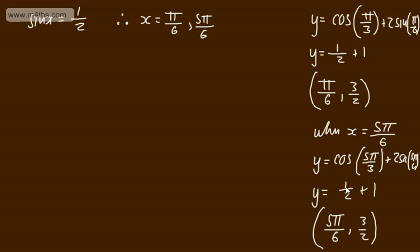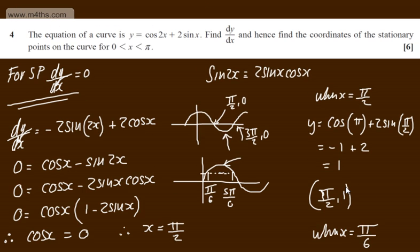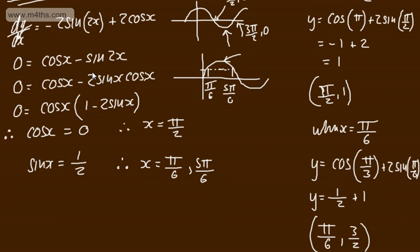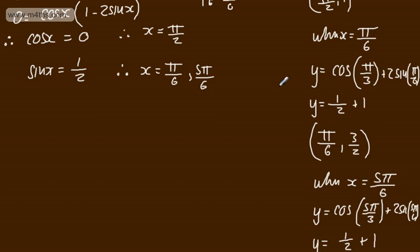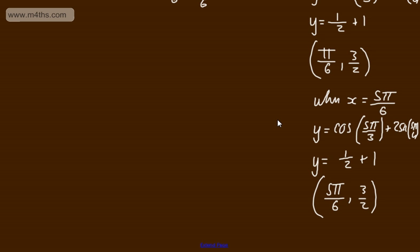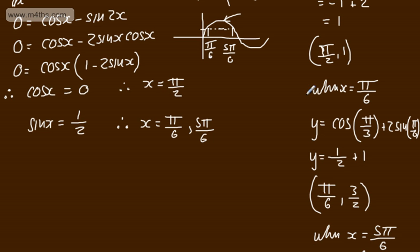That gives us the coordinates of the stationary points between 0 and π. For 6 marks in total: we differentiated, set it to 0, solved for the x-coordinates, substituted them in to find the y-coordinates without a calculator — though you're welcome to use one — and expressed three different sets of coordinates.